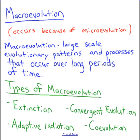Macro means big or large, so macroevolution is going to be large-scale evolutionary patterns or processes that occur over long periods of time. We're talking about really big evolution events — things like extinction, adaptive radiation, convergent evolution, and coevolution. These are really large-scale evolutionary patterns that take a very, very long time.